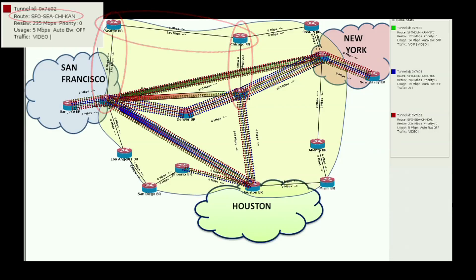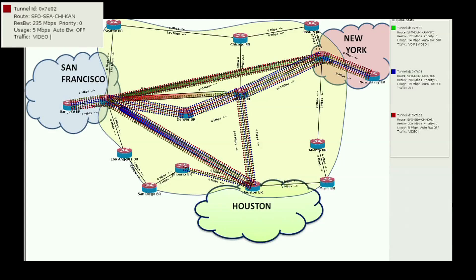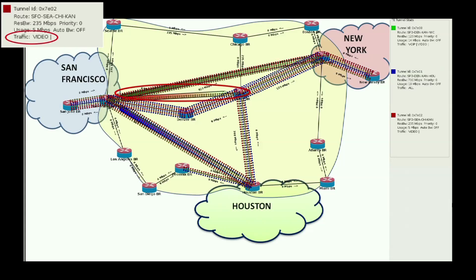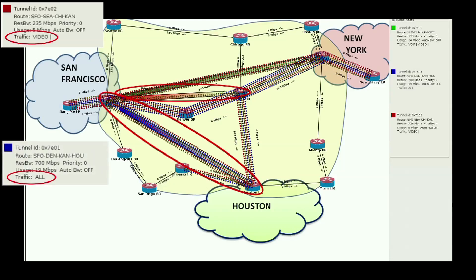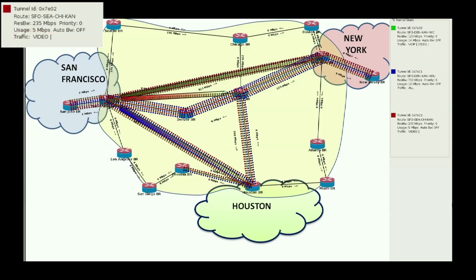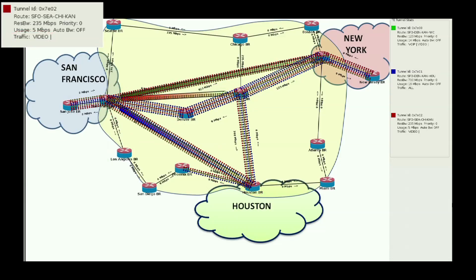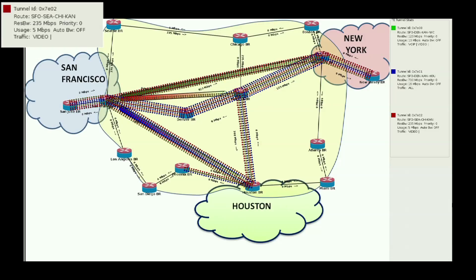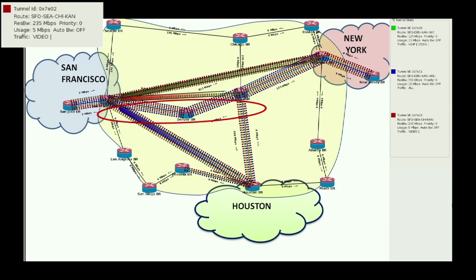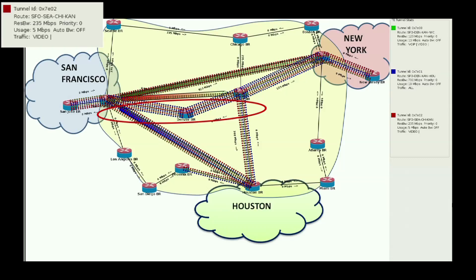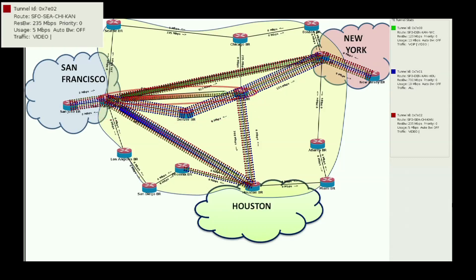We can also create tunnels of a specific traffic type. For example, the San Francisco-Kansas tunnel accepts only video traffic, while the San Francisco-Houston tunnel allows all kinds of traffic. And we can load balance traffic flows over a tunnel and IP links. For example, traffic flows between San Francisco and Kansas are routed over the regular IP links between San Francisco, Denver, and Kansas, and also over the orange tunnel which actually takes the Seattle-Chicago route.